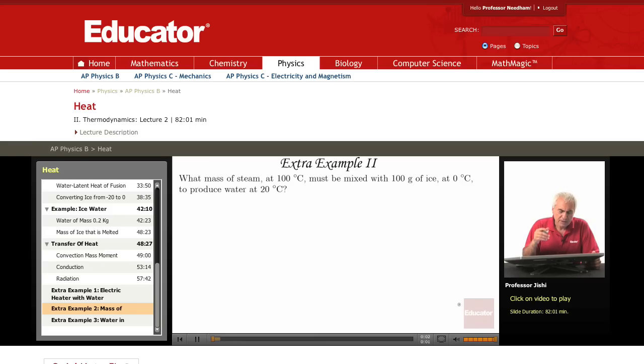What mass of steam at 100 degrees Celsius must be mixed with 100 grams of ice at zero Celsius to produce water at 20 Celsius?